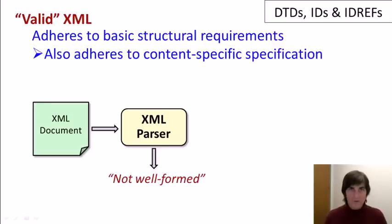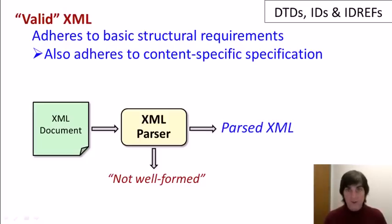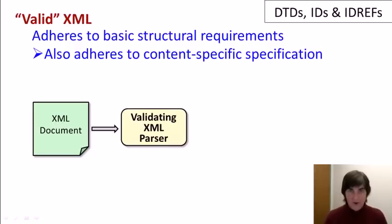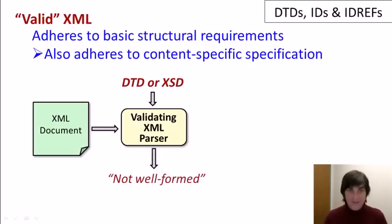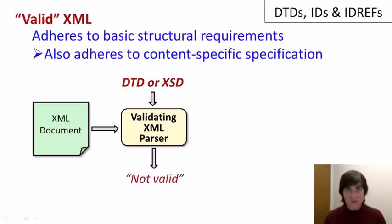As a reminder, here's how things work with well-formed XML documents. We send the document to a parser, and the parser would either return that the document was not well-formed, or it would return parsed XML. Now with valid XML, we use a validating XML parser, and we have an additional input — a specification, either a DTD or an XSD — fed to the parser along with the document. The parser can say the document is not well-formed, not valid, or return parsed XML if everything is good.